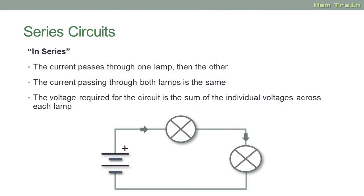So just to recap on series circuits. The current goes through one lamp and then the next. It's the same current flowing through both lamps. And the total voltage for the circuit is the sum of the individual voltages across each lamp. So in that previous example, a three volt battery, 1.5 volts through the first one and 1.5 through the second one. Hopefully that's a little bit clearer.